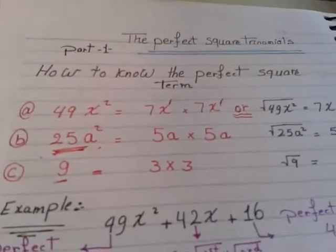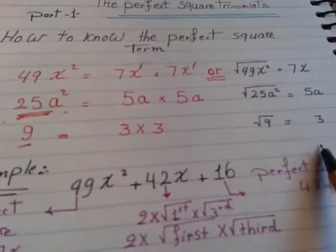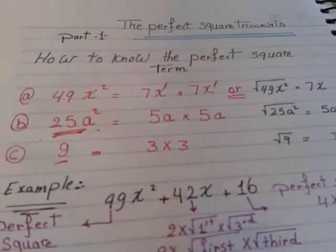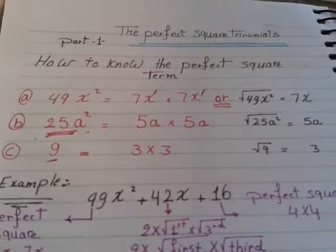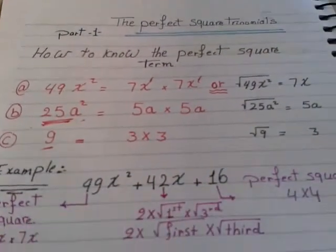For example, number like 9. Can we get root of 9? Of course, root 9 equals 3 because 3 times 3 equals 9. This is a very short intro for the lesson today to get the idea of perfect square terms.